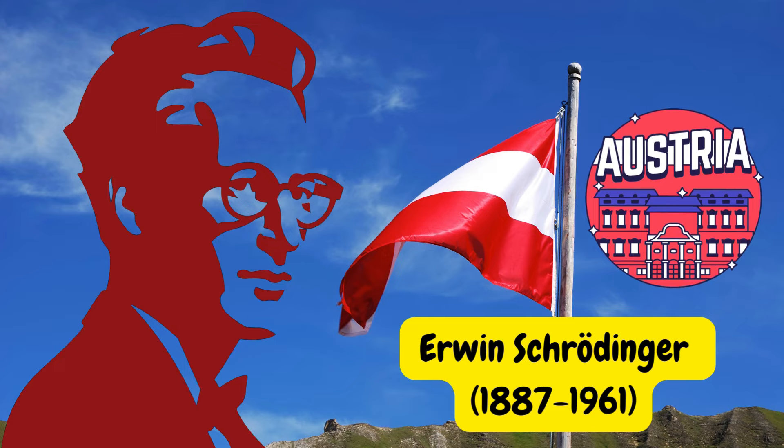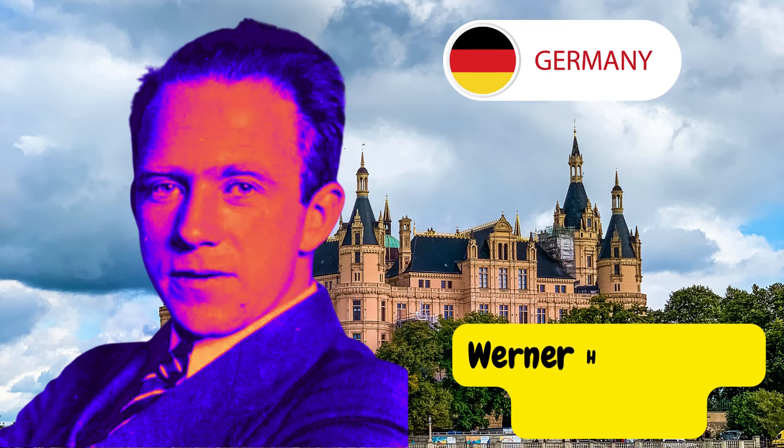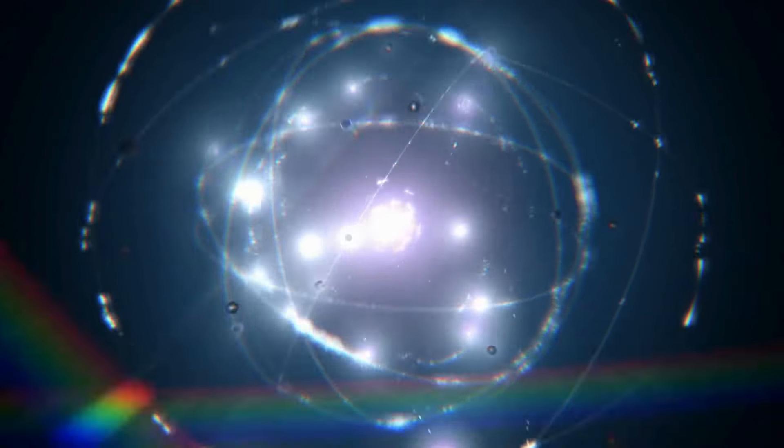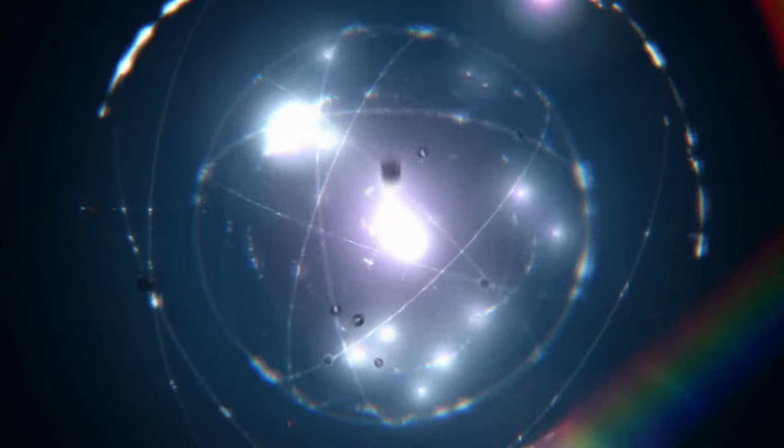In this model, the nucleus is surrounded by an electron cloud, and the probability of finding an electron is high in the denser areas of the electron cloud and low in the less dense regions. This model created the idea of sub-energy levels.